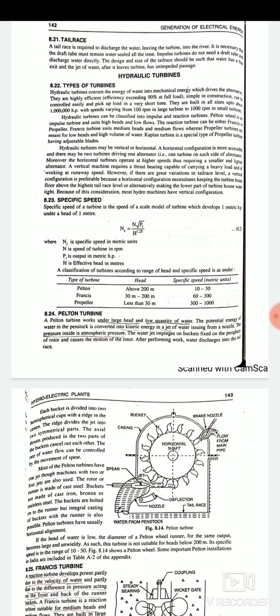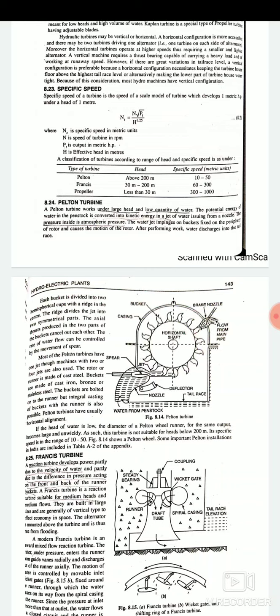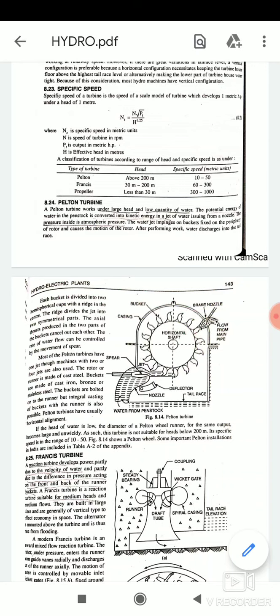Next is specific speed of the turbines. Specific speed of a turbine is the speed of a scale model of turbine which develops one metric HP under a head of one meter. The equation can be written as Ns equals N root PT divided by H power 1.25, where Ns is the specific speed, N is the speed of the turbine in RPM revolution per minute, PT is the output in metric, and H is the effective head in meters. So this is a table that describes the classification of turbines according to the range of head and specific speed. The Pelton turbine head is greater than 200 meter and the specific speed must be 10 to 50 metric units. The Francis have 30 to 200 meters, that is 60 to 300, and propeller that may be Kaplan turbine, that less than 30 meters, that is 300 to 1000 specific speed.